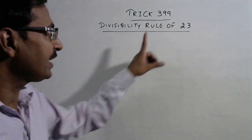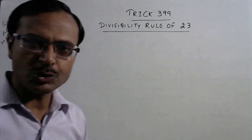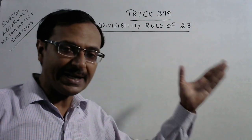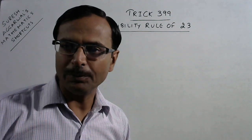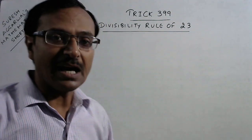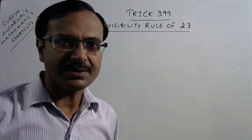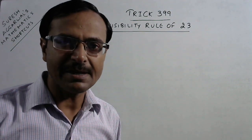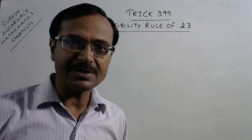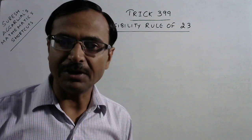Hello dear friends, in trick number 399, I am going to deal with the divisibility rule of 23. I do not think many of you must have heard of this kind of divisibility rules by such large numbers. But sometimes we require these tricks for finding the LCM and HCF of numbers wherein we have to find the factors. And whenever numbers are divisible by 23, it is quite difficult to identify.